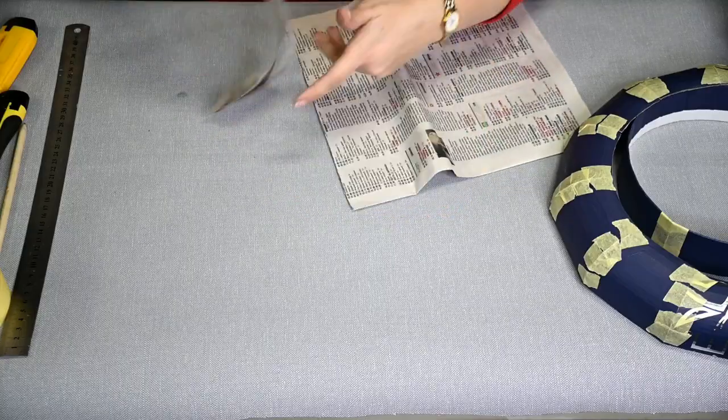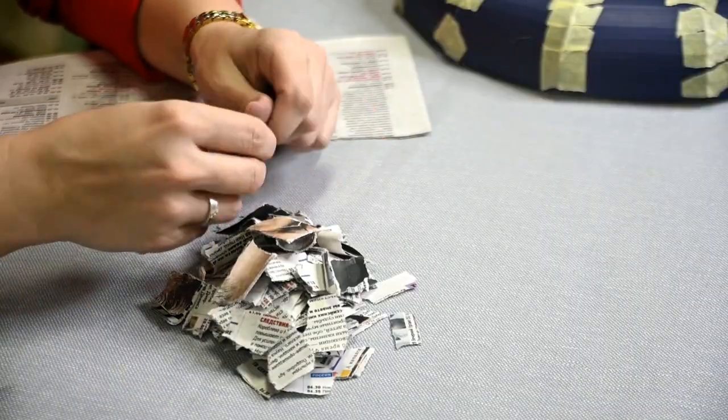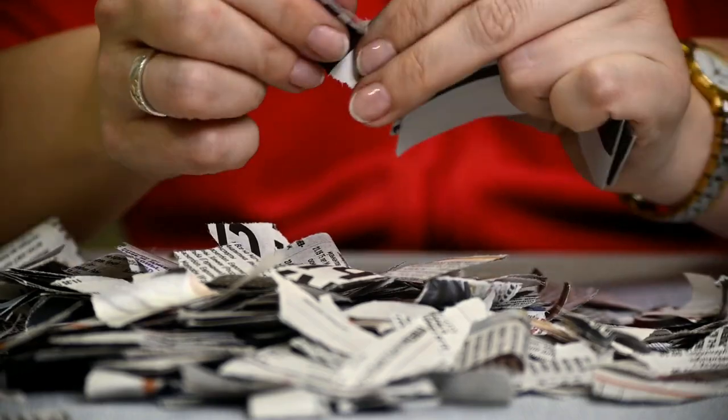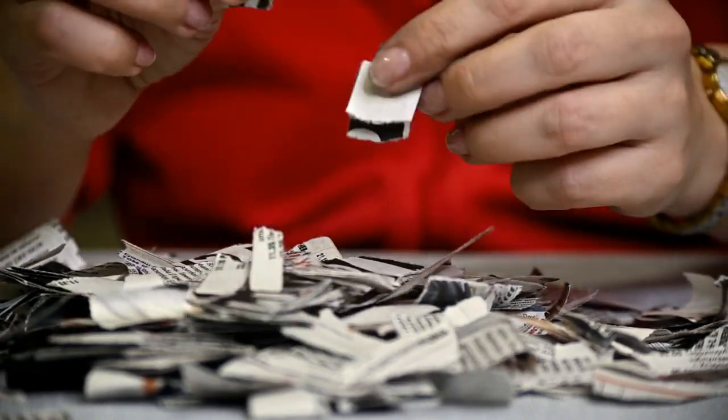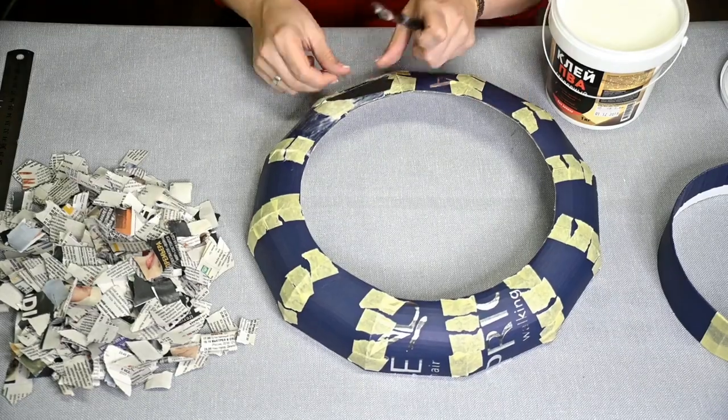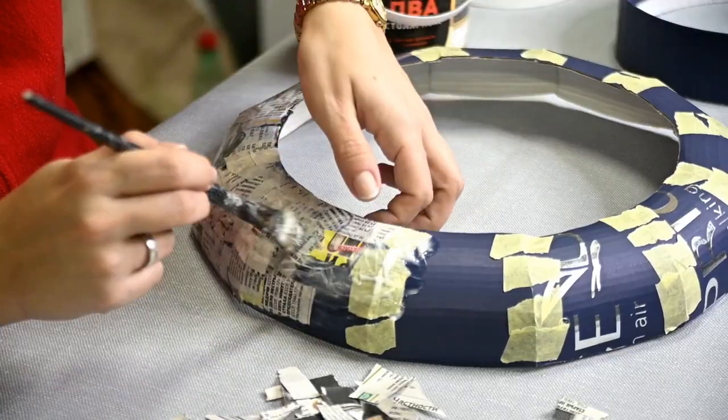Then I'm taking some old newspapers. I'm tearing them into pieces until I get some bigger pile and covering the cardboard base with pieces of newspaper dipped into white glue. I'm not thinning the glue so papier-mâché turns out to be really strong.